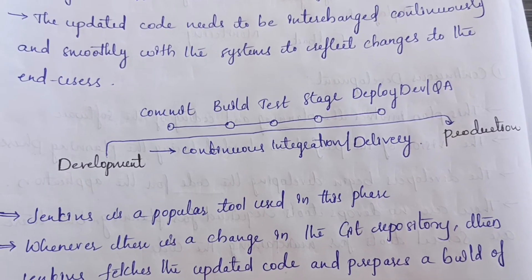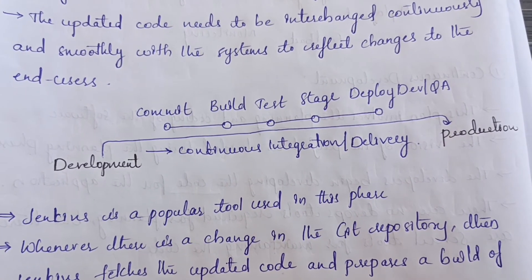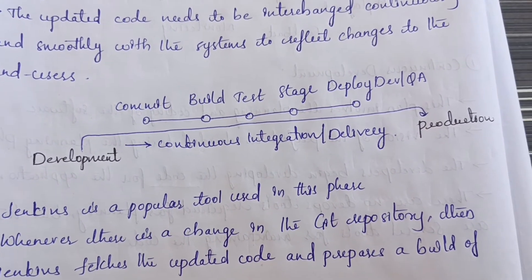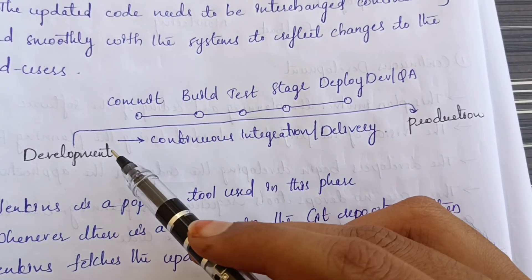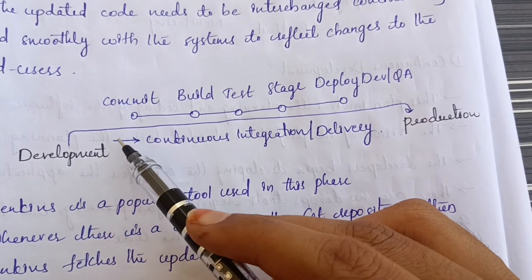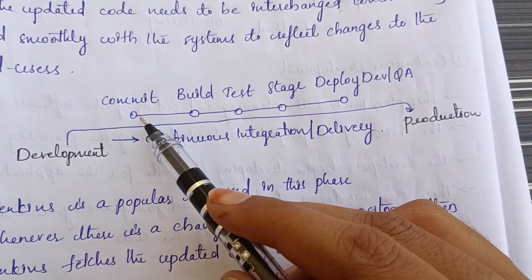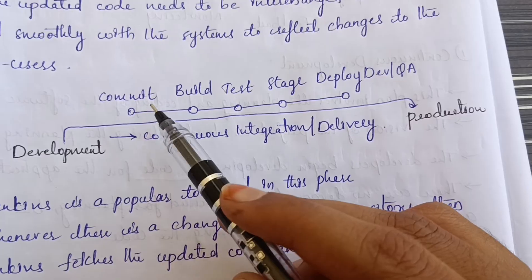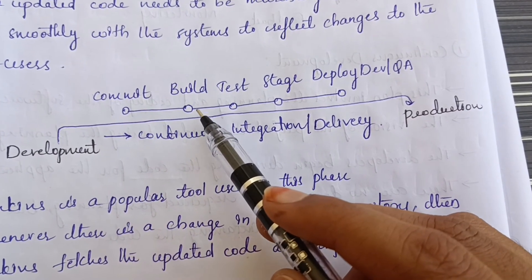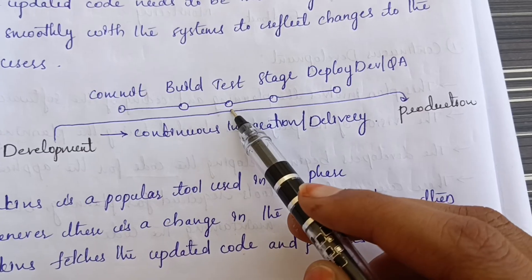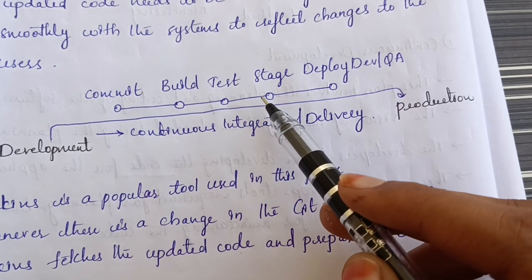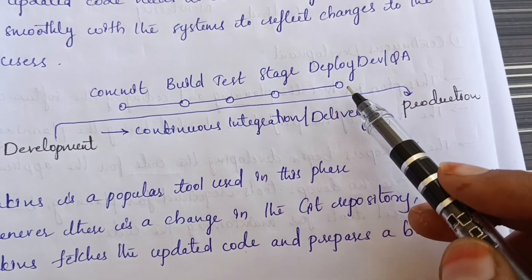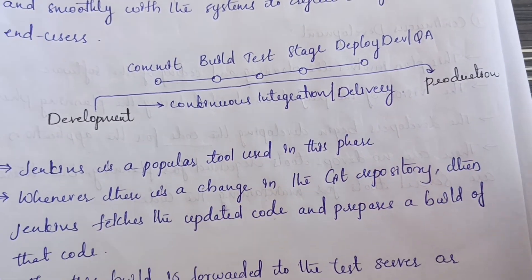The process of continuous integration and continuous development goes like this: first a developer writes the code, then commits it, then builds that code, then tests the code, then stages the code, and finally deploys the code to the production team.